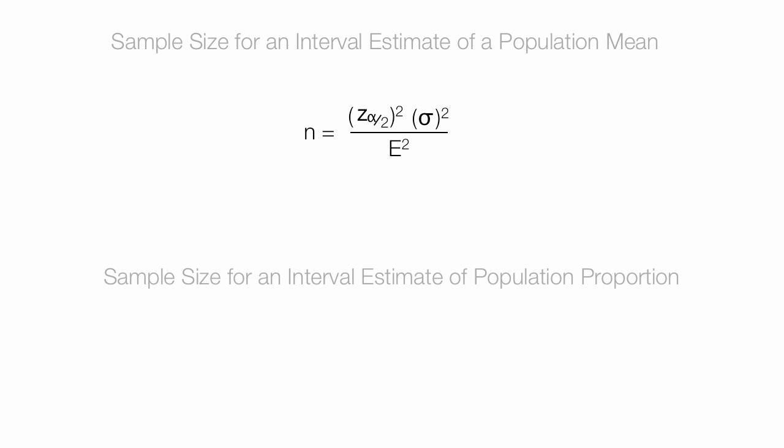When you study sample sizes, there's two common equations you use. One is sample size for an interval estimate of a population mean, and the other one is sample size for an interval estimate for population proportion. You'll find the link to the sample size for an interval estimate of a population proportion below.